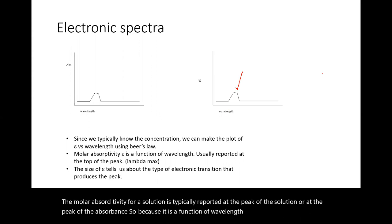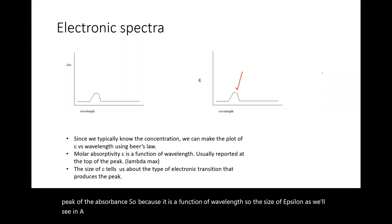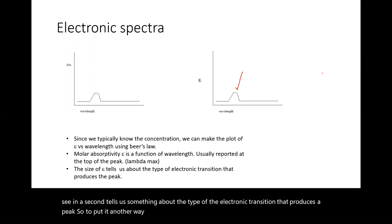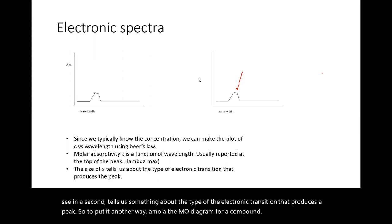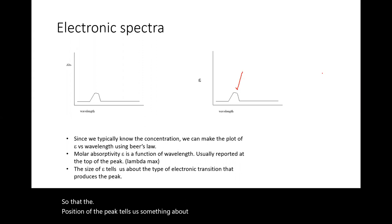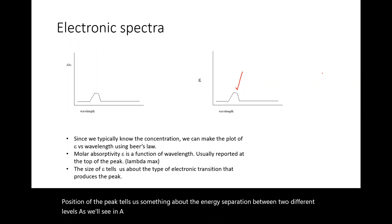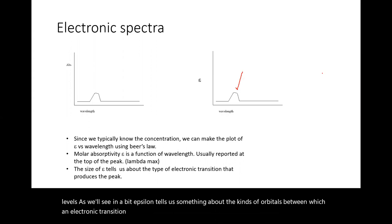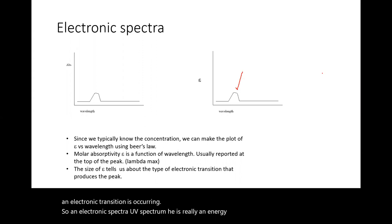The size of epsilon tells us something about the type of electronic transition that produces a peak. The MO diagram for a compound tells us about the energy levels in the complex, so the position of a peak tells us about the energy separation between two different levels. Epsilon tells us about the kinds of orbitals between which an electronic transition is occurring — a UV spectrum is really an energy map of the compound in question.